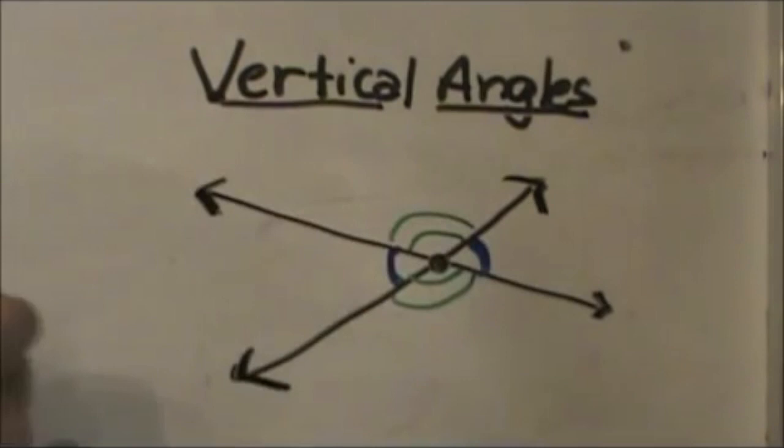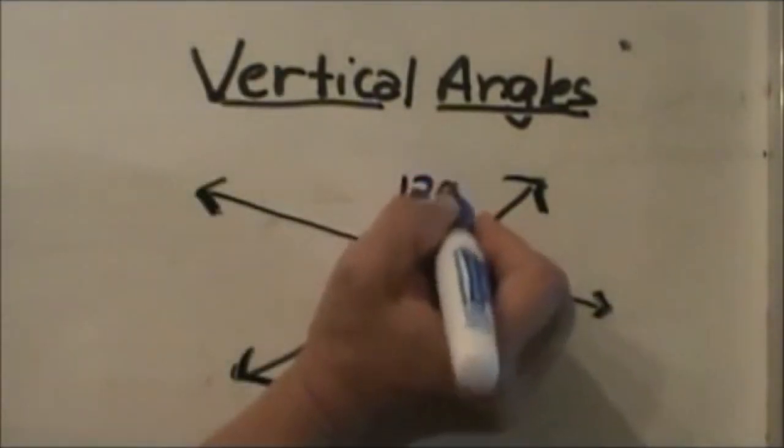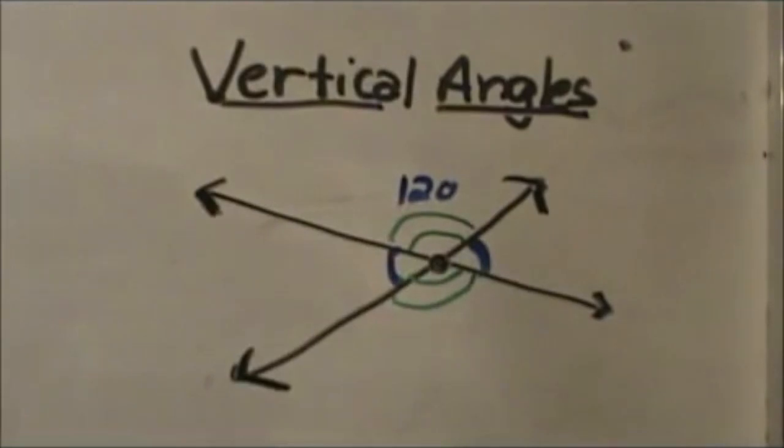So these two blue angles are congruent and these two green angles are congruent. Now I'm going to throw some numbers in there. What if I make this angle 120 degrees? Can I figure out the rest? I can.